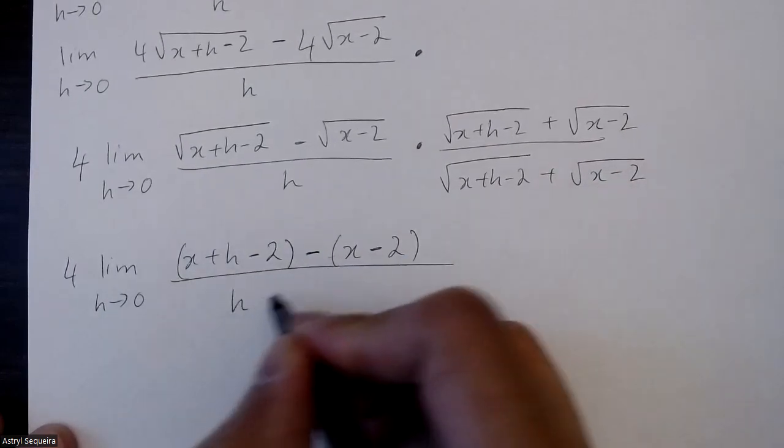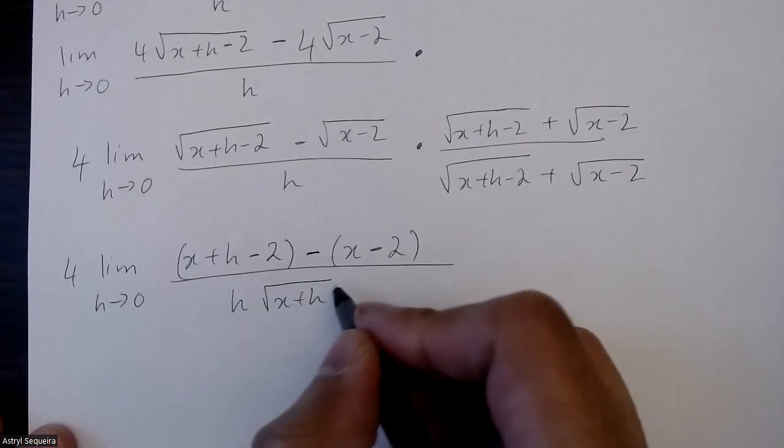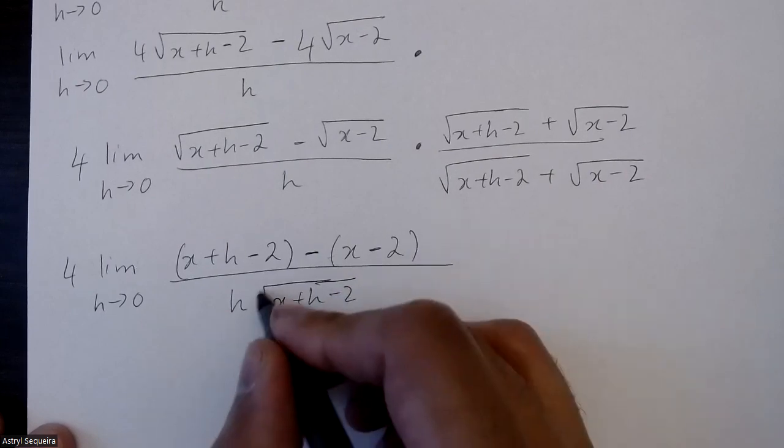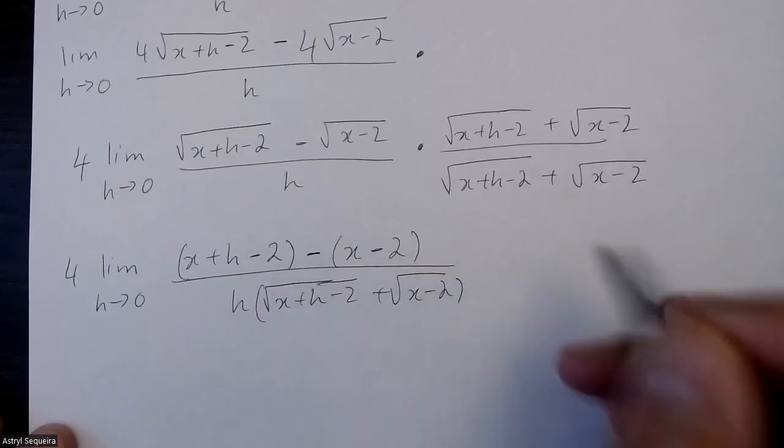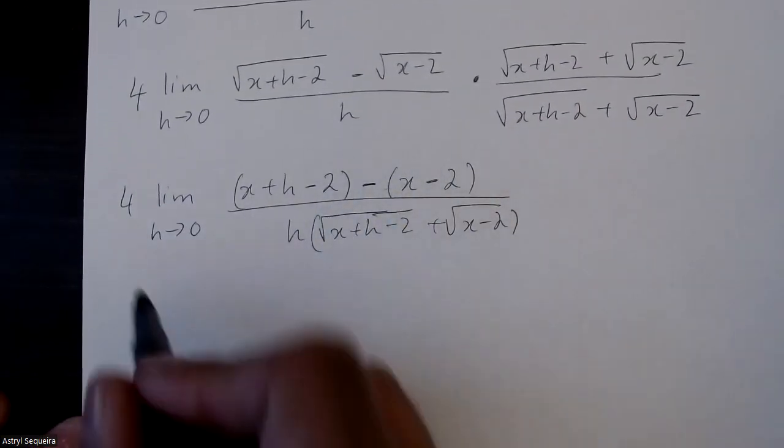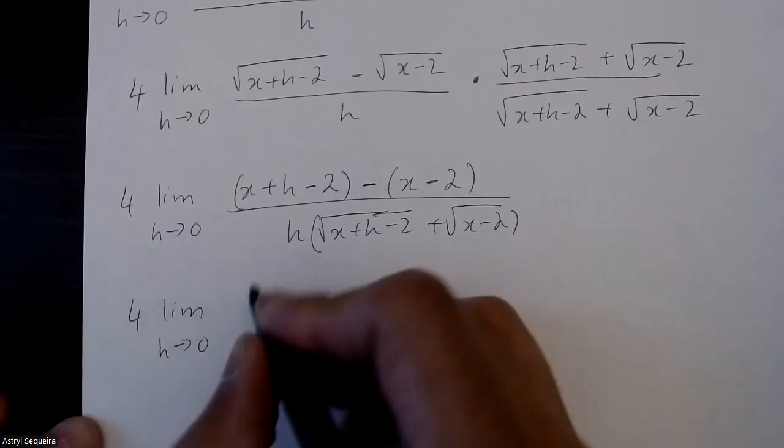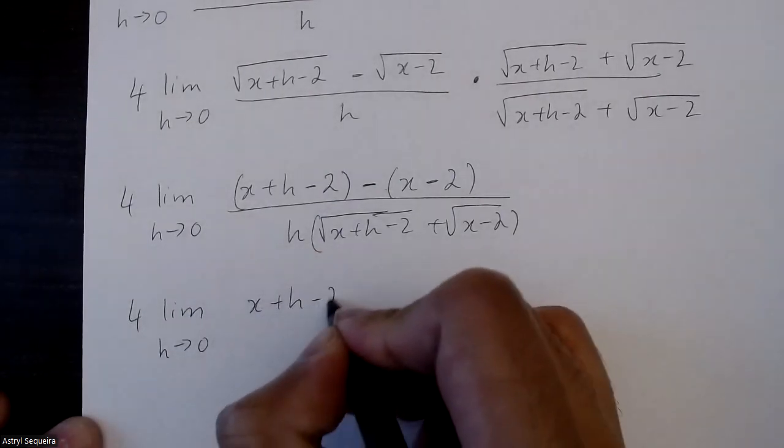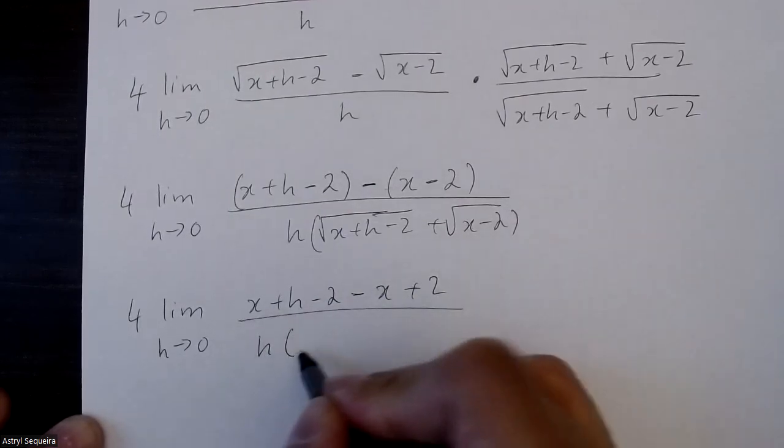My bottom is just h times root x plus h minus 2 plus root x minus 2. I want to simplify the top and get rid of the brackets here. So x plus h minus 2 minus x plus 2. Bottom stays the same.